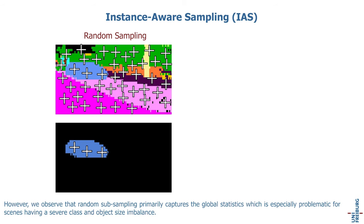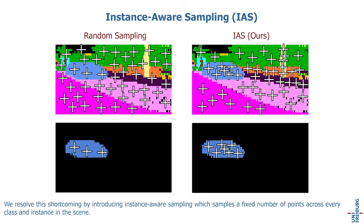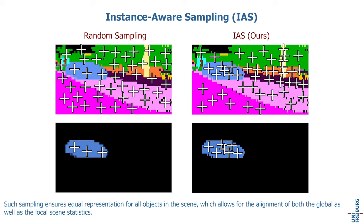However, we observe that random subsampling primarily captures the global statistics, which is especially problematic for scenes having a severe class and object size imbalance. We resolve this shortcoming by introducing instance-aware sampling, which samples a fixed number of points across every class and instance in the scene. Such sampling ensures equal representation for all objects, allowing for alignment of both global and local scene statistics.